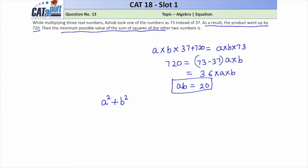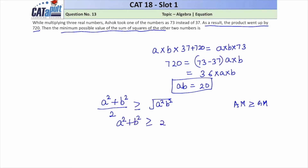Since a² and b² are both positive numbers, we can apply the AM-GM inequality: (a² + b²) / 2 ≥ √(a² · b²). This gives us a² + b² ≥ 2 × |ab| = 2 × 20 = 40. So the minimum possible value of a² + b² is 40.